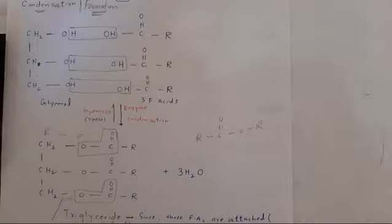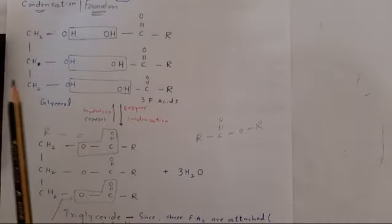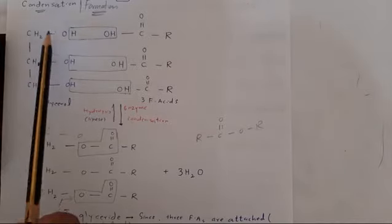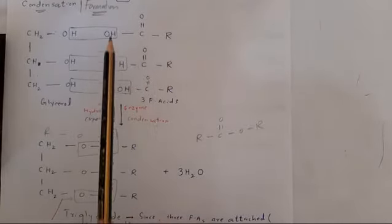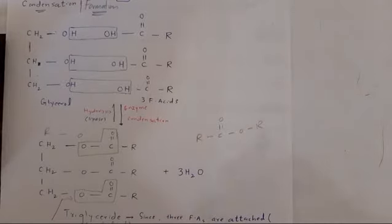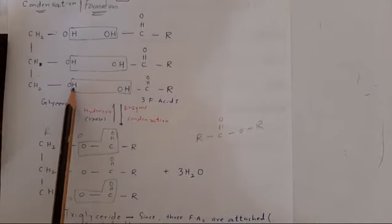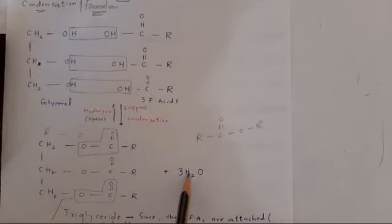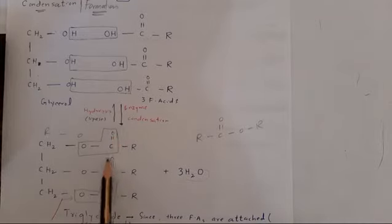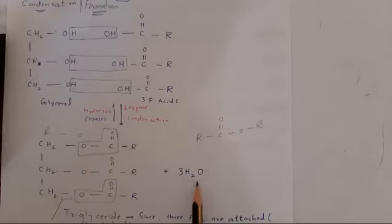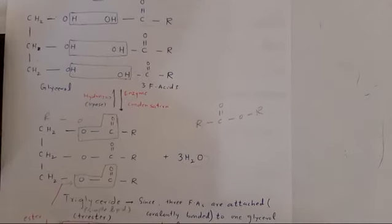Now fatty acids and glycerol are joined together by condensation reaction. This is glycerol, a 3-carbon alcohol, each bearing a hydroxyl group, and these are 3 fatty acids. In condensation, a hydroxyl group is removed from one monomer and hydrogen is removed from another monomer. So three water molecules are removed and a triglyceride molecule is formed in the presence of enzyme lipase.